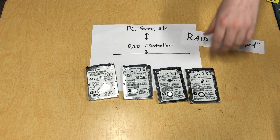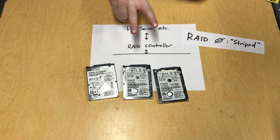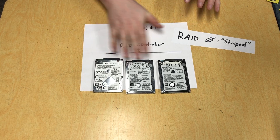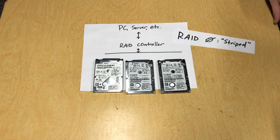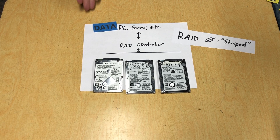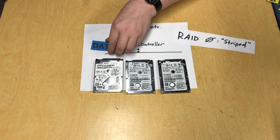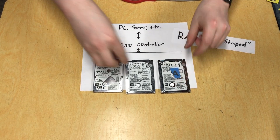We'll start with RAID 0, also known as Striped. For this setup, you need at least two drives, but we're going to use three just to illustrate the point a little bit better. The way that RAID 0 works is it spreads the data evenly across the drives by splitting the data up into chunks called stripes. Let's say that our computer has created some data that it wants to write to what it thinks is one storage volume, so it'll pass it to the RAID controller.